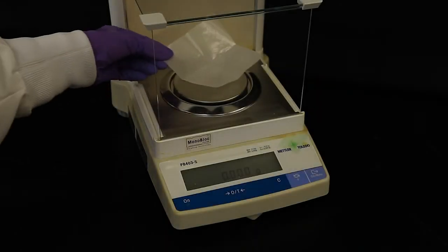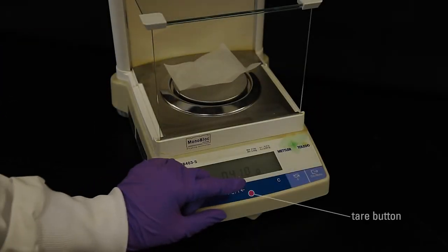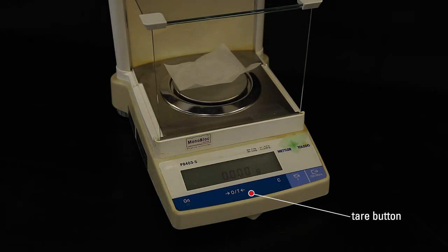Place the weighing paper on the balance. Then press the tare button to subtract the mass of the weighing paper. Wait patiently until the gram reader shows zero.